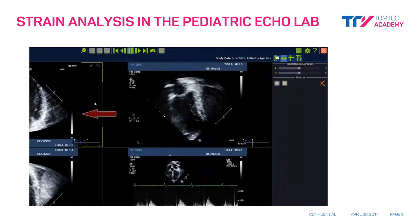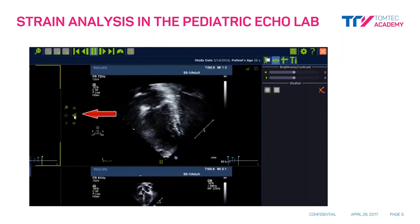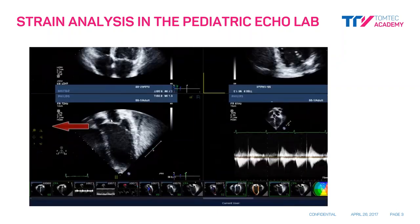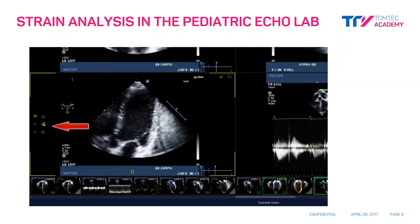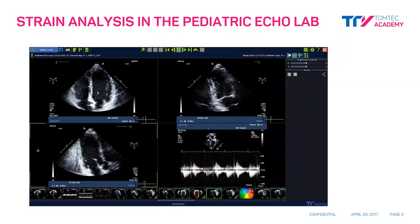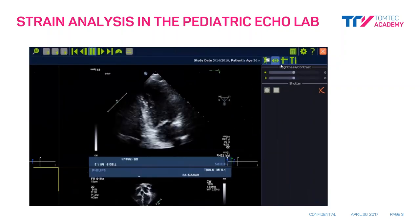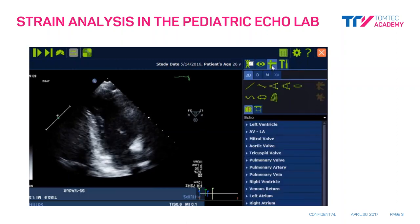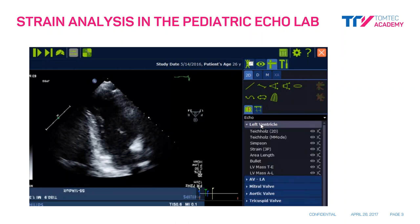Next, we will do the same for the apical two and three chamber views; however, for these views we will not only flip up and down, but also left and right for proper segmental orientation. Once completed, we can proceed to the measurement package located in the upper right hand corner. Select the left ventricle option and then select the strain three plane option.